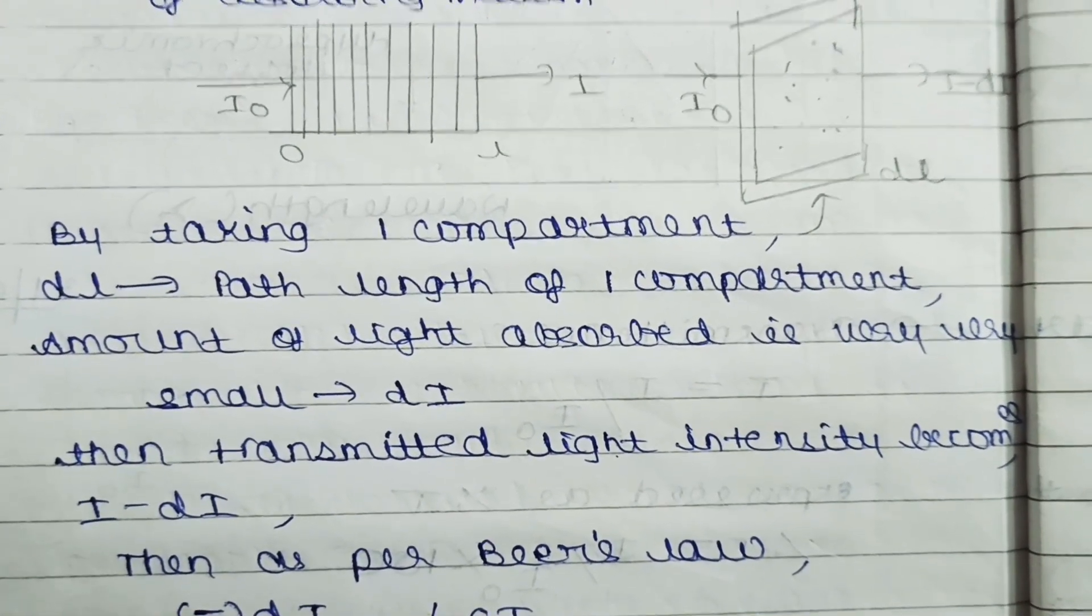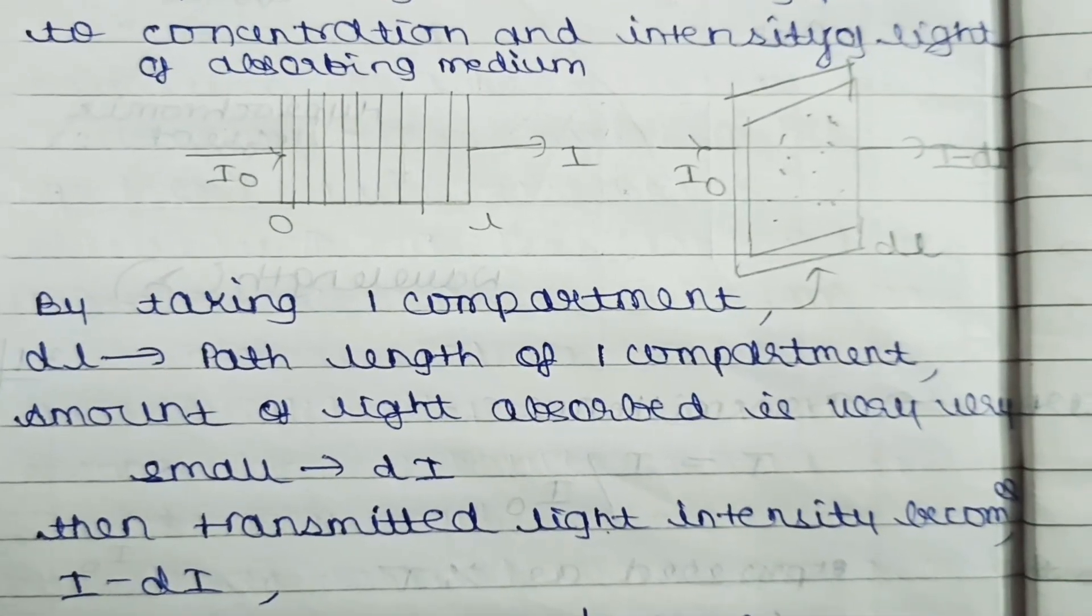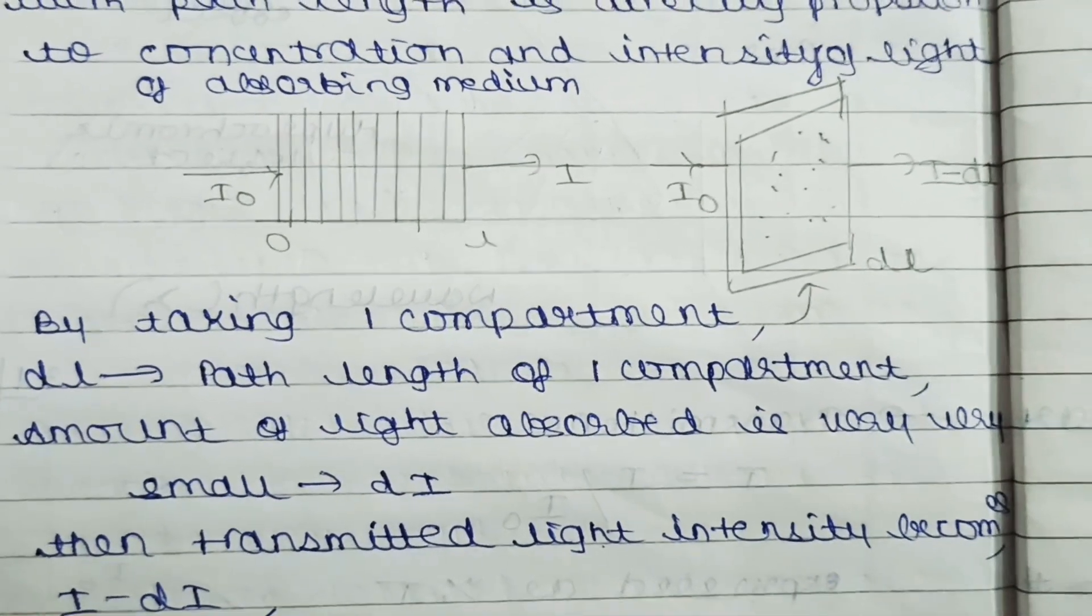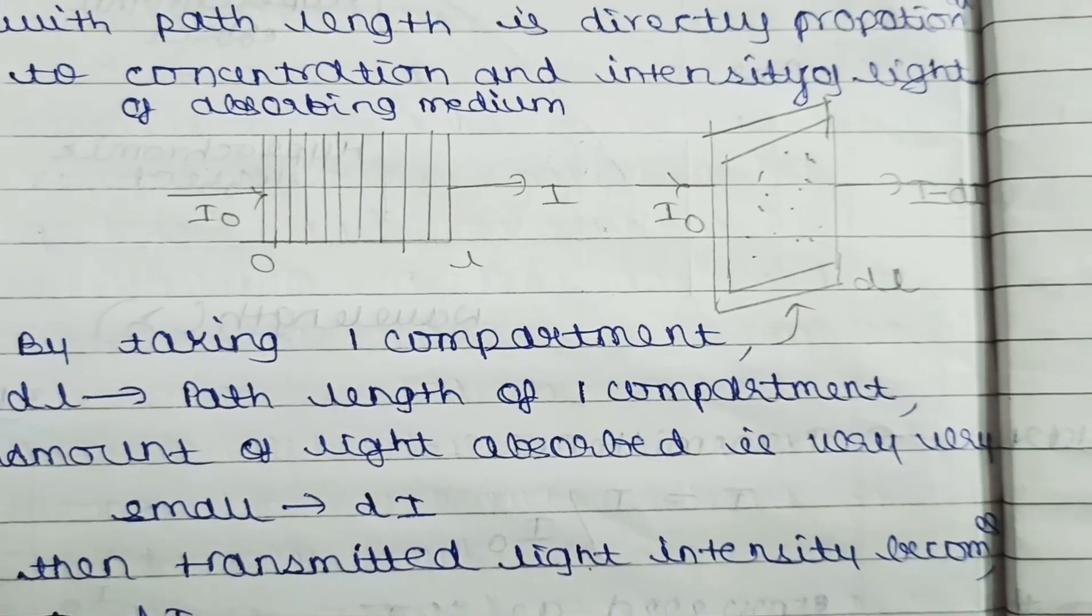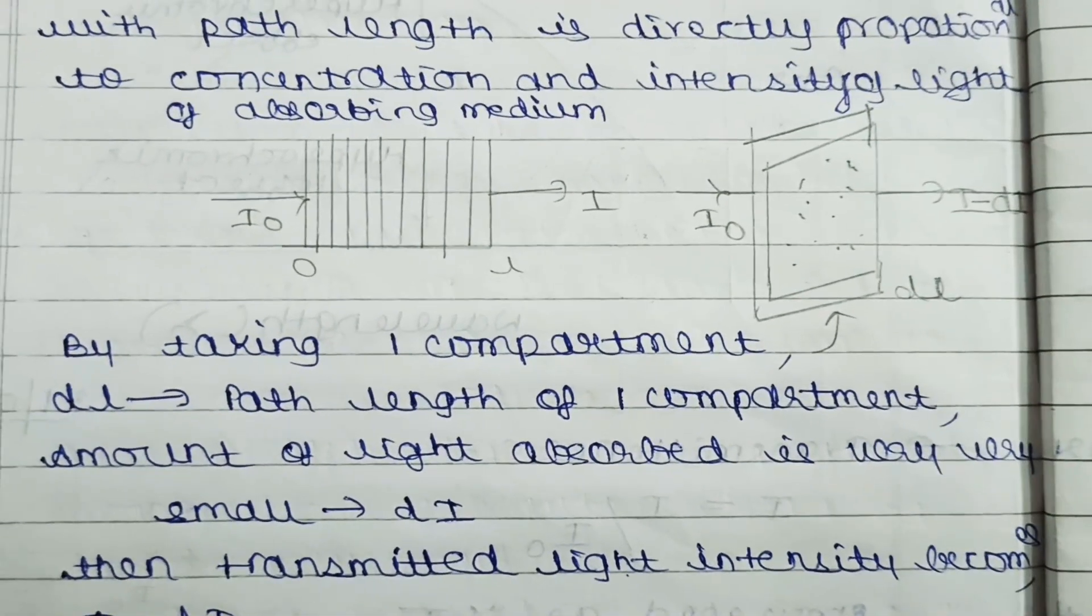For considering this, we have to consider a smaller portion of the beaker—the smaller portion has length DL. The intensity of the light is I₀, and transmitted light becomes I minus DI.